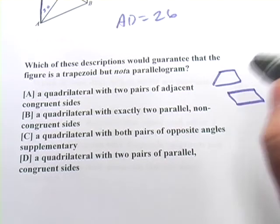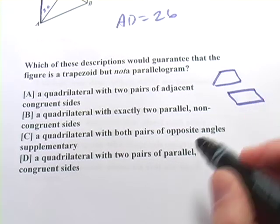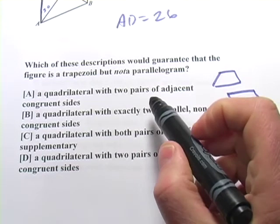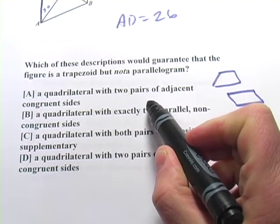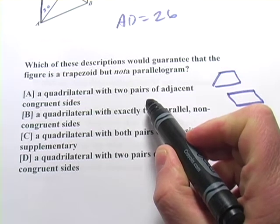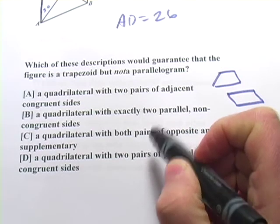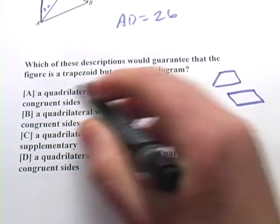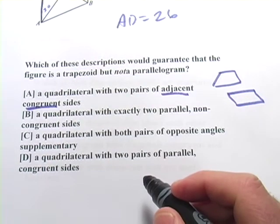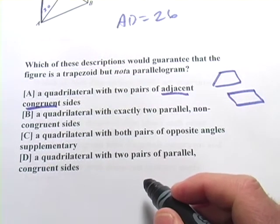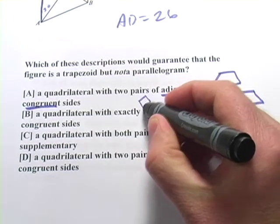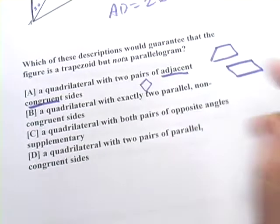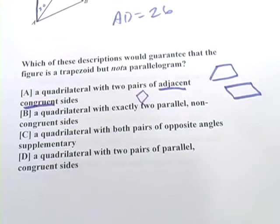So, we want to find something that defines a trapezoid and not a parallelogram. This first one says, a quadrilateral with two pairs of adjacent congruent sides. Well, two pairs of adjacent congruent sides mean that they're next to each other, and they measure the same length. And that, actually, is the definition of a kite. Those two sides would be the same length. These two sides would be the same length. And you've got a kite there. So, I don't think it's A.